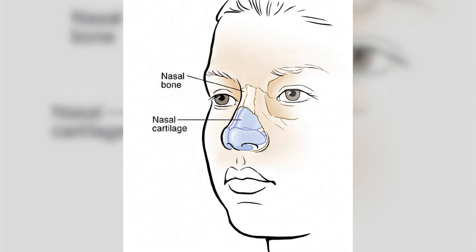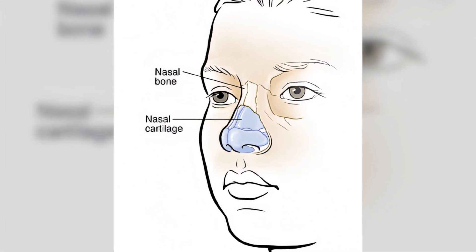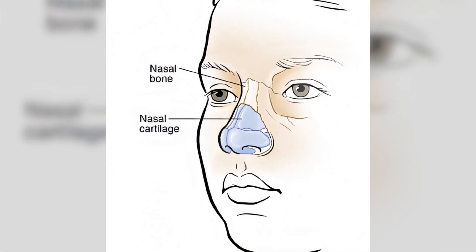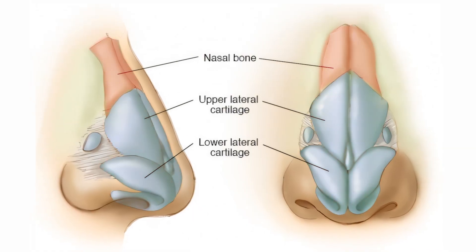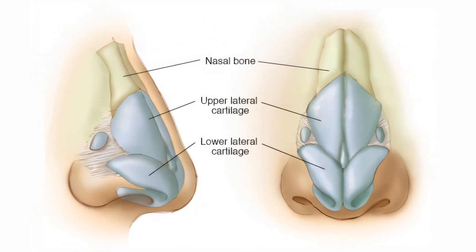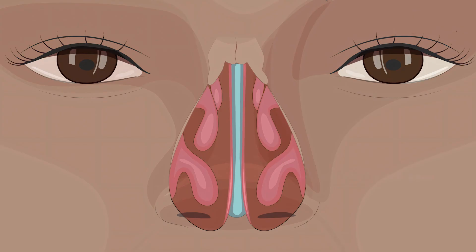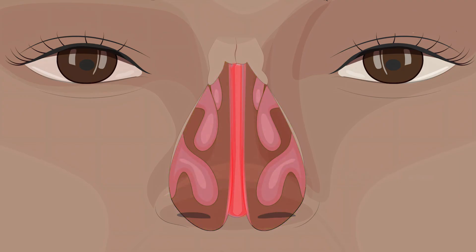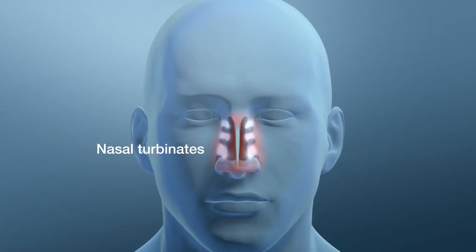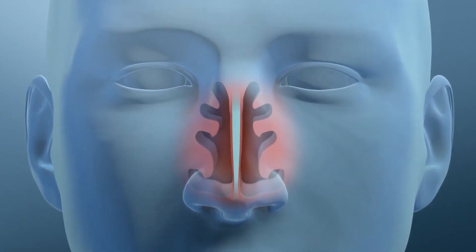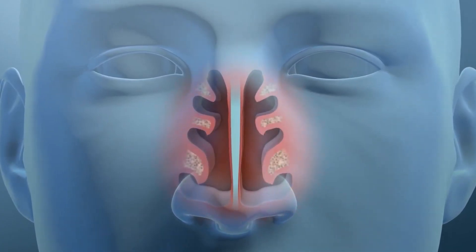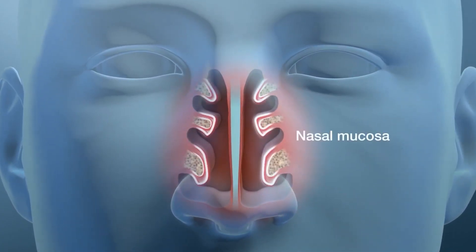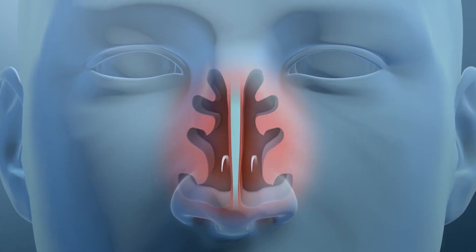The nasal skeleton is made of a combination of bone and cartilage, which gives the nose its shape and structure. Cartilage is a flexible tissue that is softer than bone, allowing for a degree of movement and flexibility. The internal nose, or nasal cavity, is divided into two halves by a thin wall called the nasal septum. Inside the nasal cavity are important structures called turbinates, also called conchae, which are curved bony plates that help warm, moisten, and clean the air as it passes through.